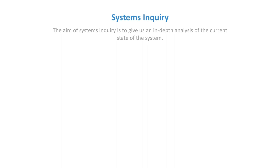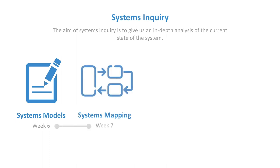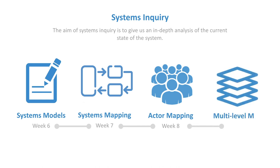We then go into systems inquiry and analysis. The aim of systems inquiry is to give us an in-depth analysis of the current state of the system. We start in week six with systems modeling — developing an overall model of what we're dealing with as a system, its functioning, its boundary and environments. We then do systems mapping, systems dynamics, looking at causal loop diagrams. Week eight is actor mapping, thinking about actors in the system and their different incentives, power, models, and values. Finally, we look at the multi-level perspective for understanding complex socio-technical transition processes.